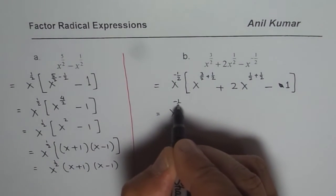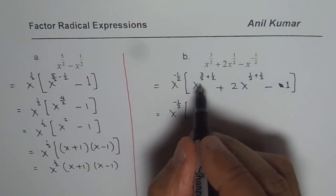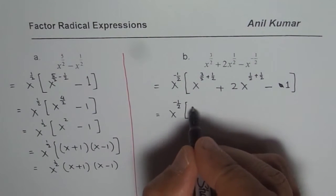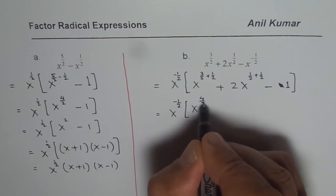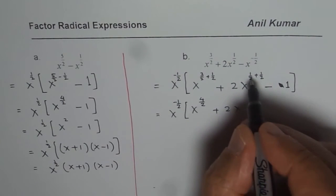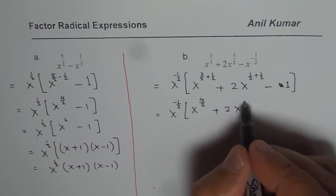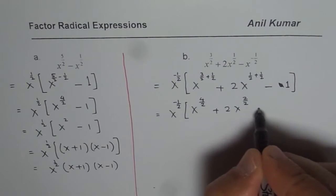Now, x to the power of minus half and 3 plus 1 is 4. So let me write 4 over 2 plus 2 times half plus half. Let me write 2 over 2, then I will do the next step.